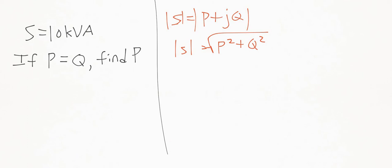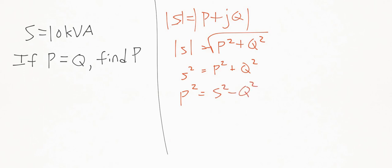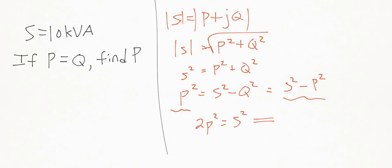Rearranging by squaring both sides and dropping the absolute values, we get S squared equals P squared plus Q squared. Solving for P, we get P squared equals S squared minus Q squared. Substituting P equals Q, we get S squared minus P squared minus P squared equals P squared. Using these two expressions, we have a much easier way of solving for P than before. Adding P squared to both sides gives us two P squared equals S squared.